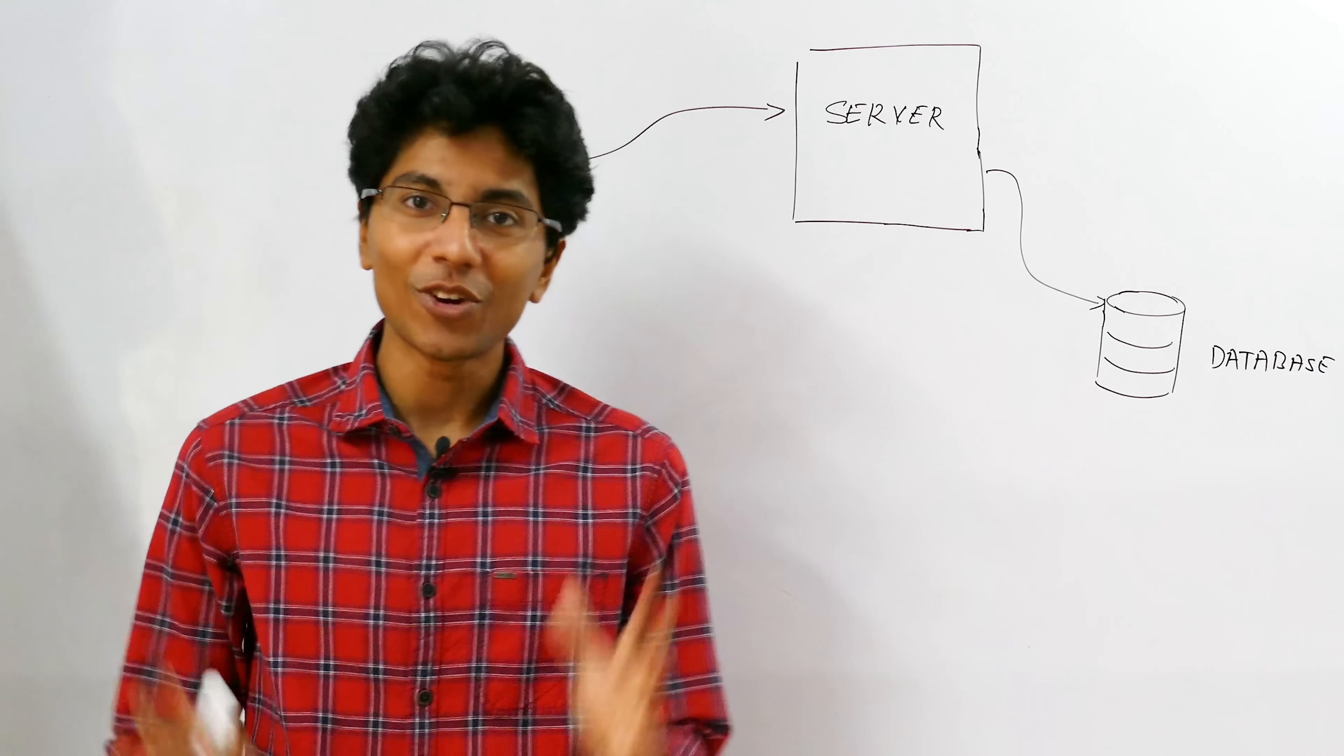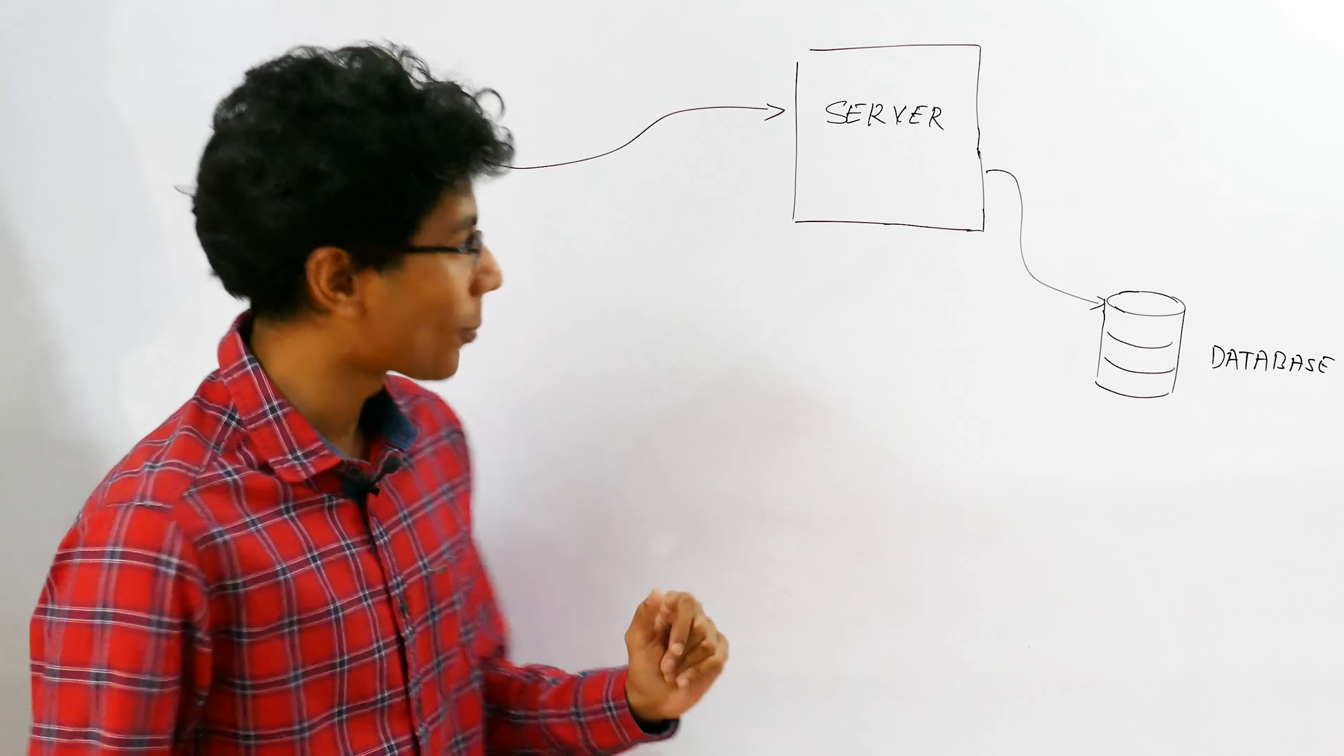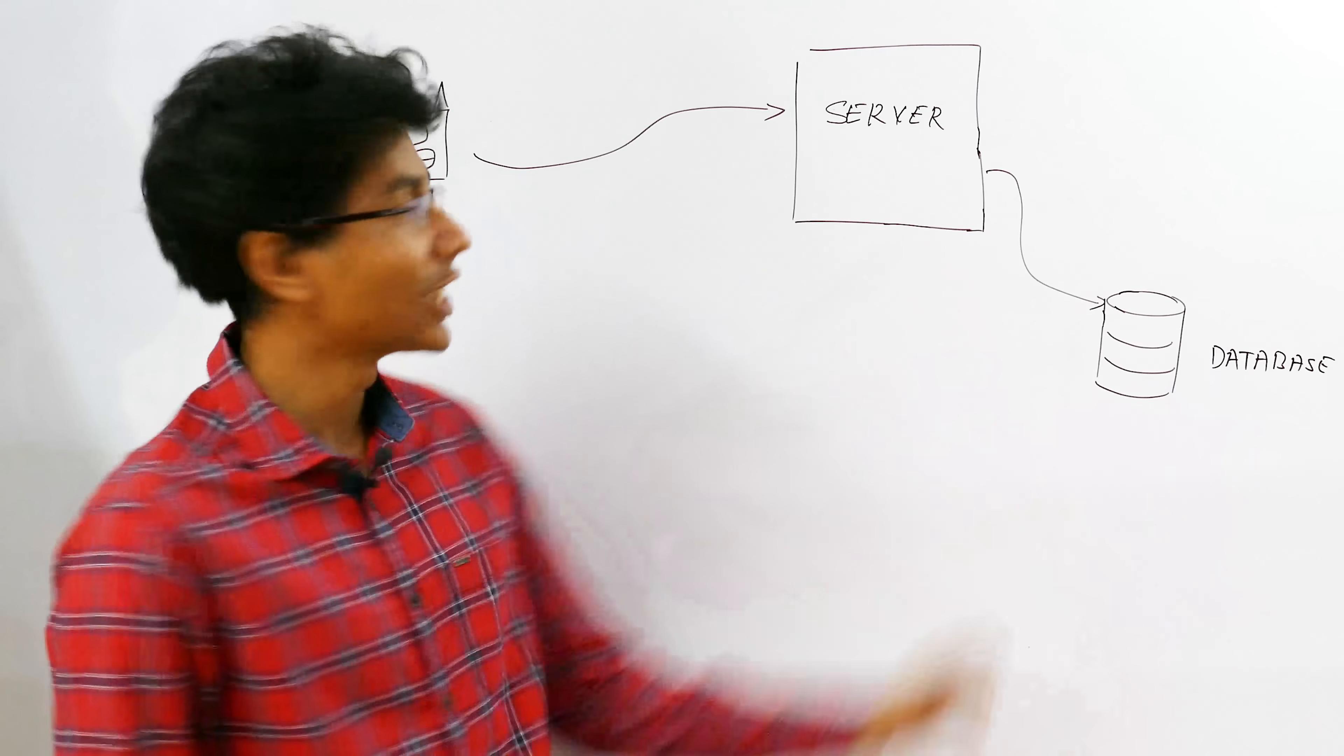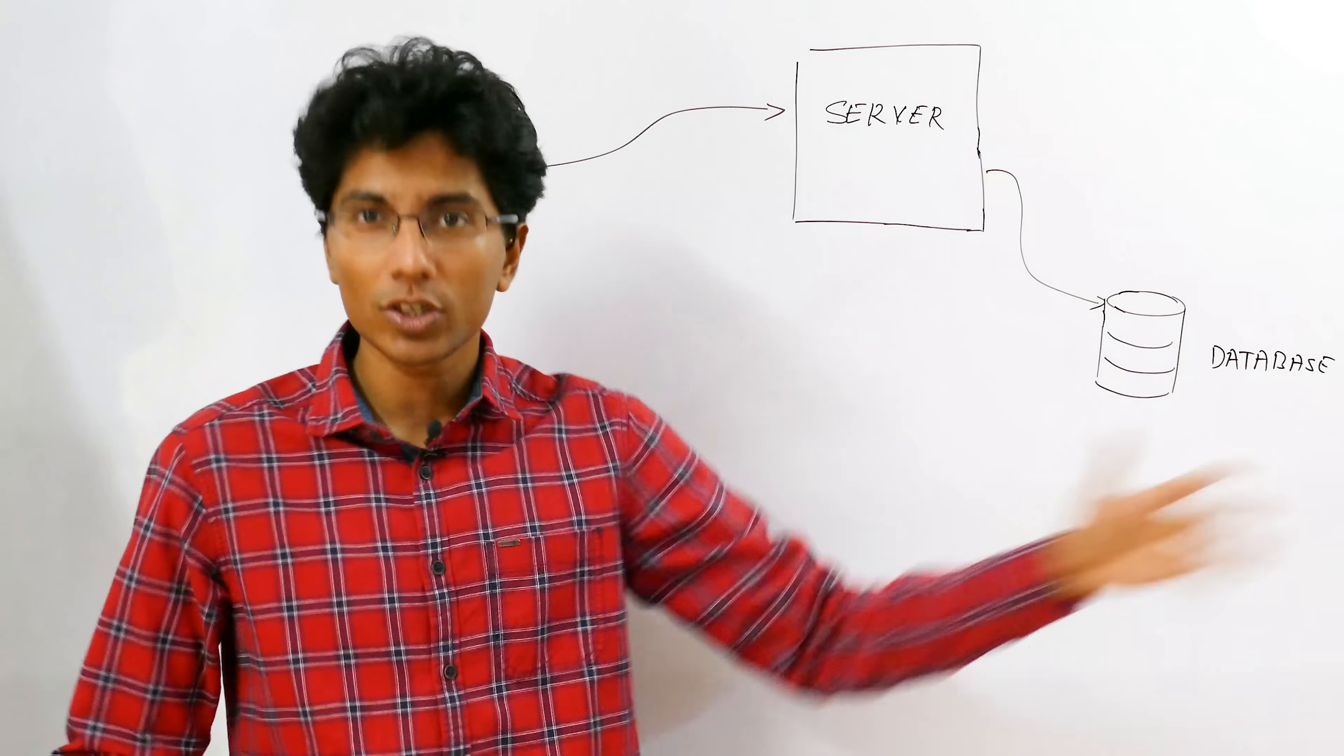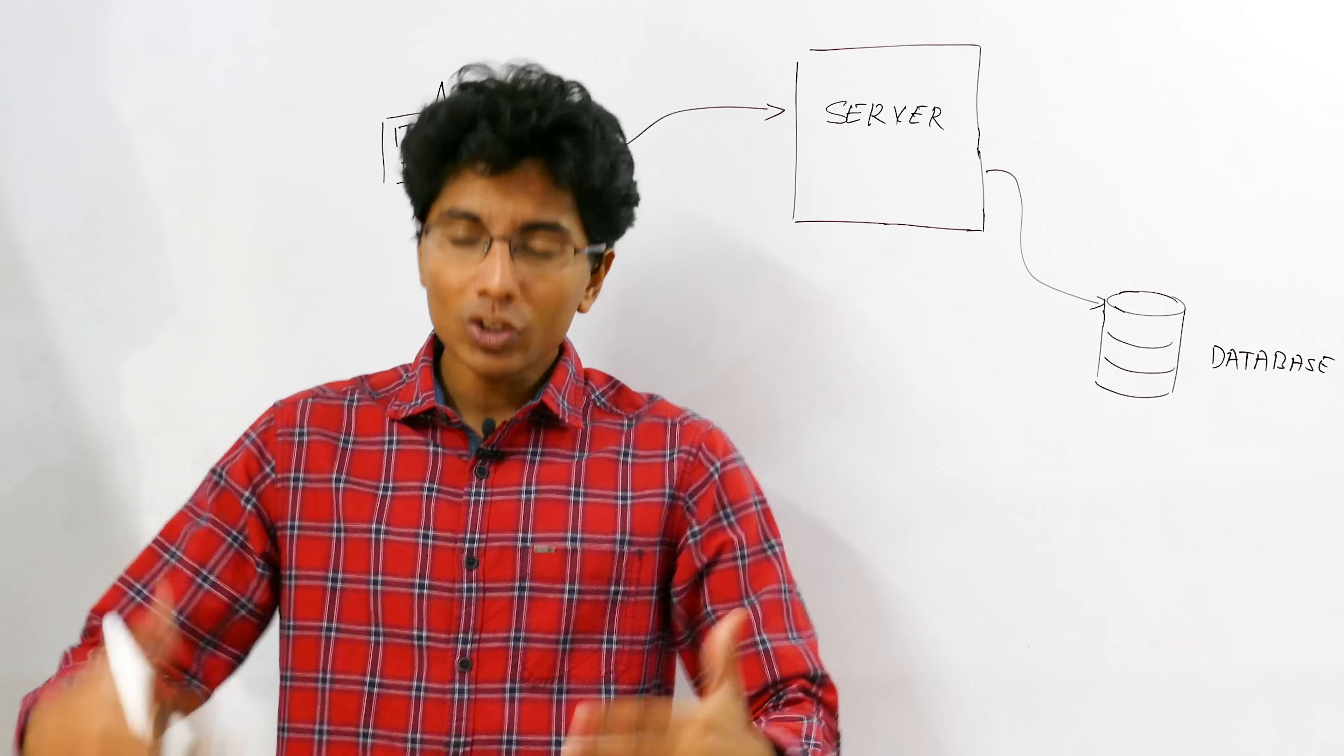Hey everyone, this is GKCS. Today we'll be talking about a way in which we can optimize writes in our database. So you have your client which sends information to your server. The server has to write to the database because it needs to maintain some state. How do you scale this?